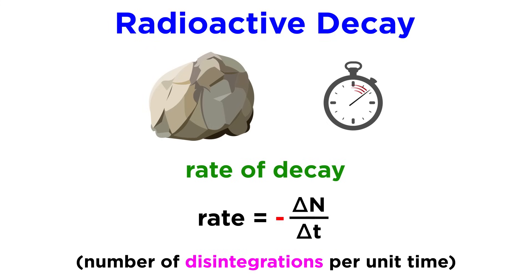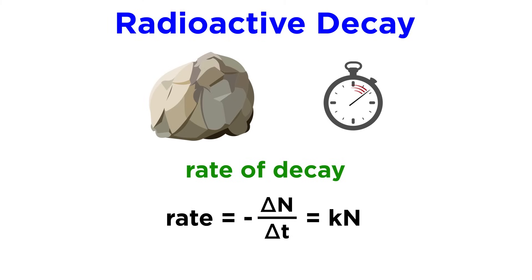This value is negative because the number of nuclides is decreasing as decay continues to occur. We can set this equal to the number of nuclides present times a proportionality constant, k.